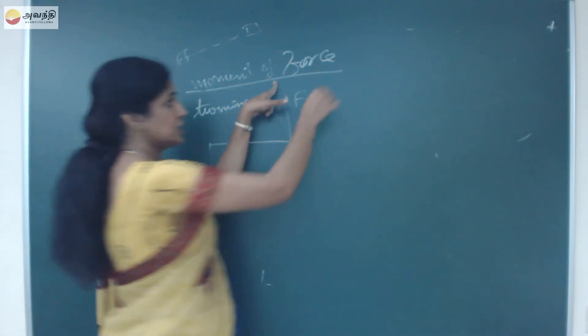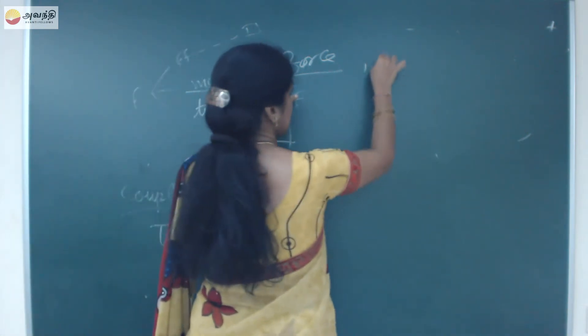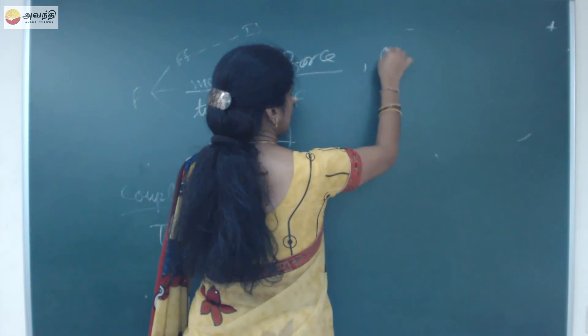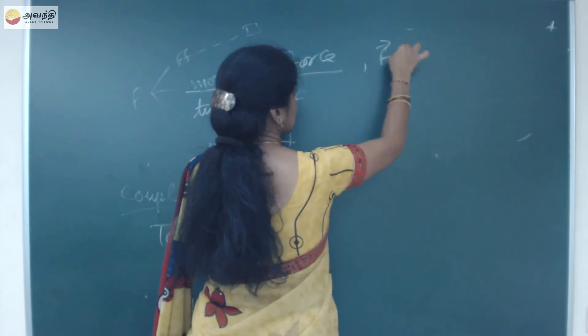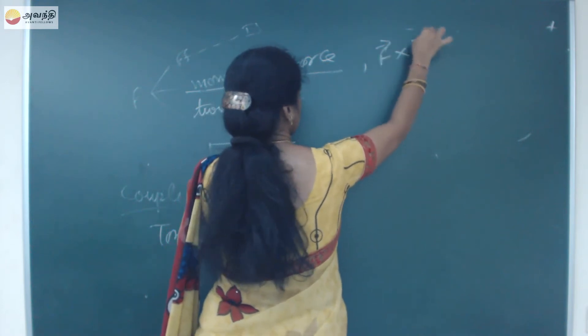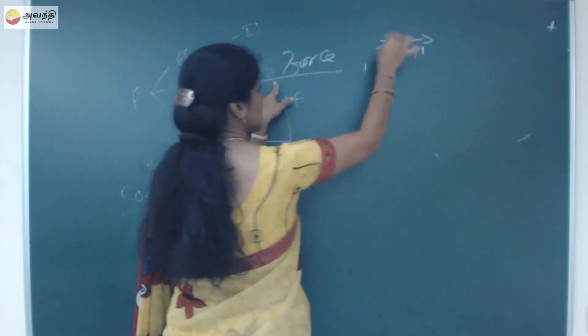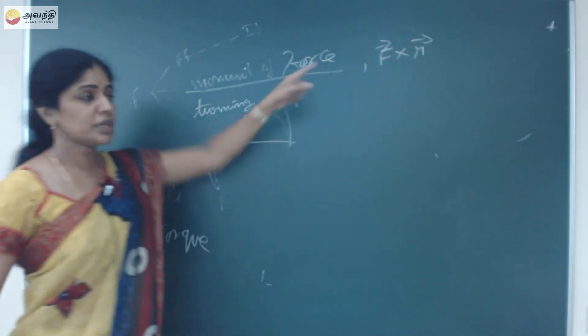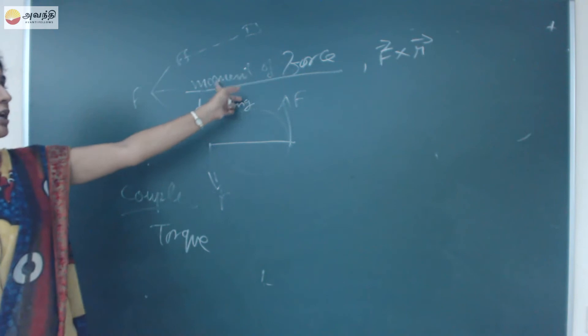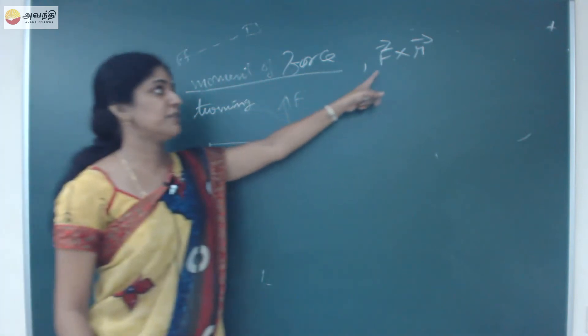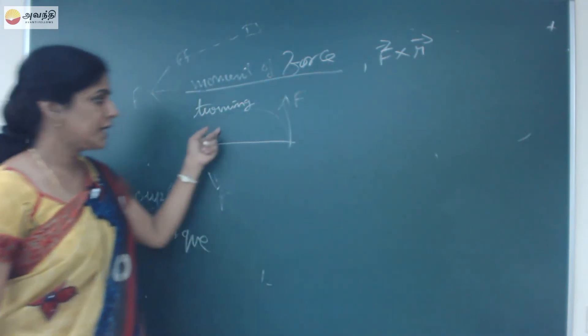The moment of the force is calculated by the product of one of the forces into the perpendicular distance between these two. M equals — the moment of the force is given by the formula F into R.